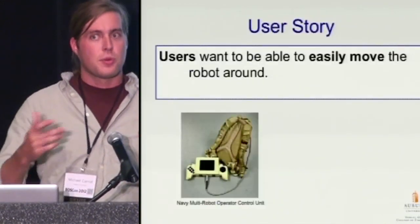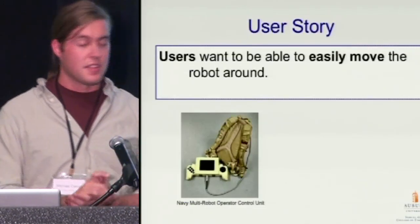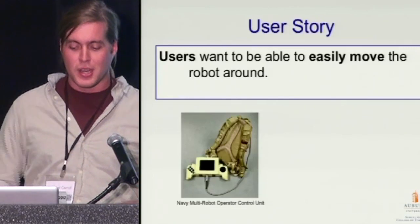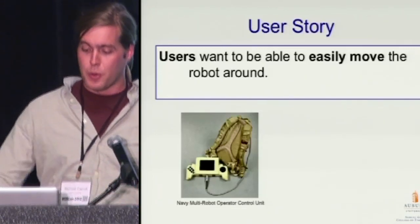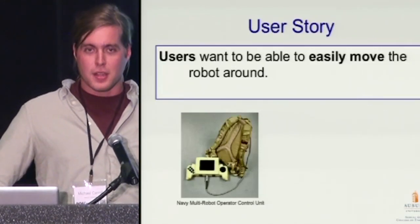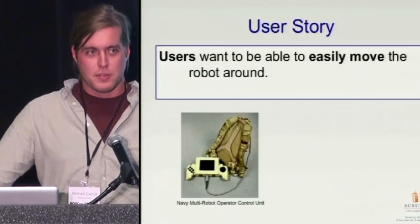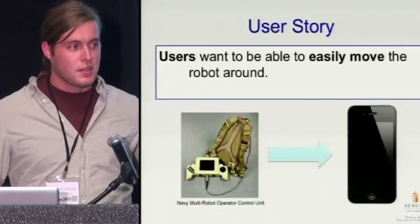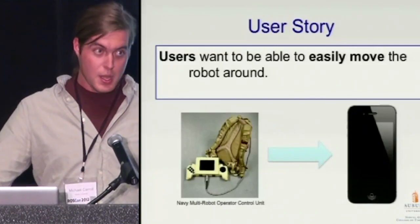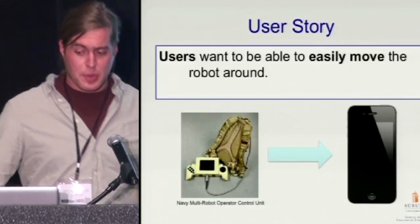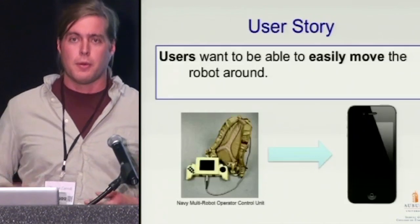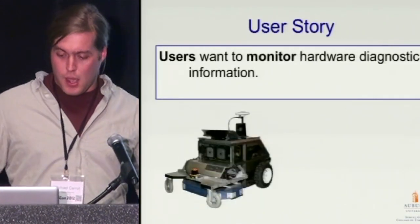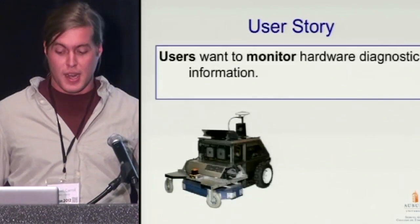This addresses use cases for field robotics where ROS can be weak. Users want to be able to easily move their robots around. The Department of Defense ships OCUs the size of a suitcase, while we carry around phones in our pockets just as powerful. I want to walk into the lab, turn the robot on, drive it out the door, collect data — without extensive console work. I also want to monitor hardware diagnostic information on the spot.